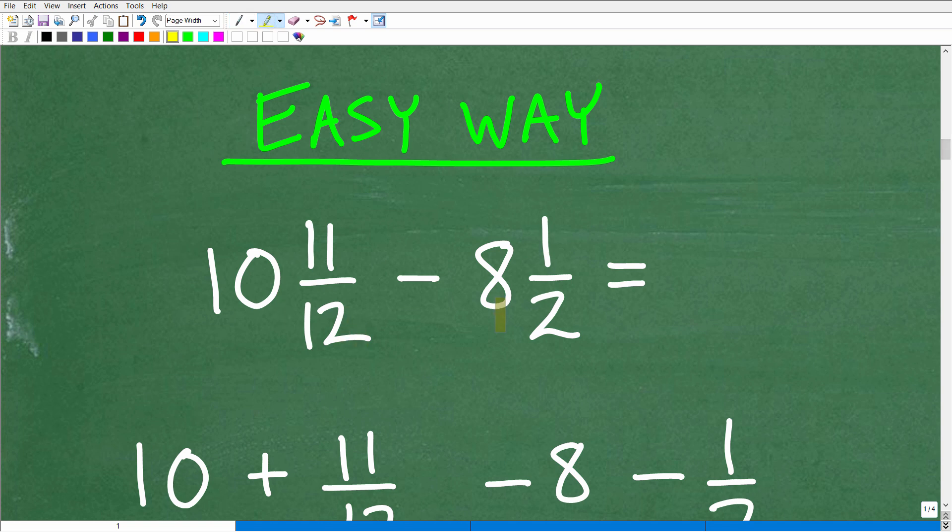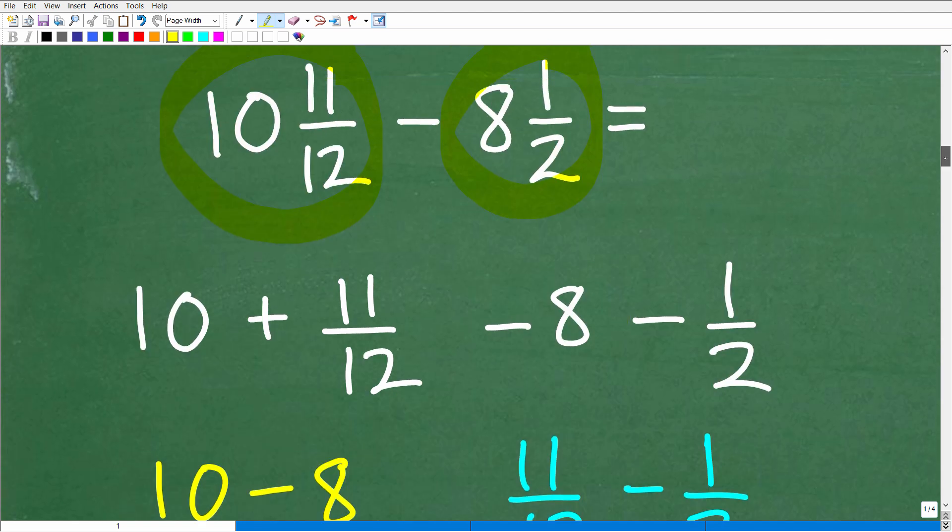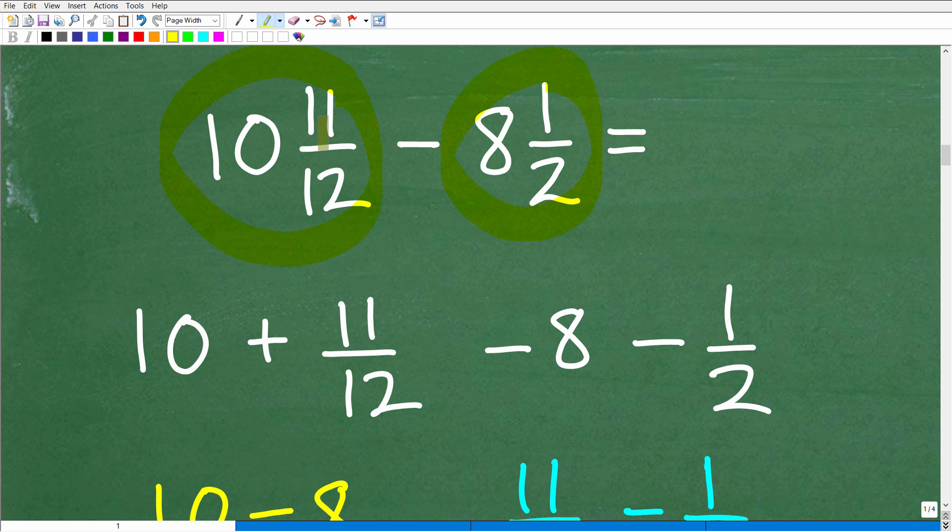So we have a mixed number fraction we need to kind of conceptualize each one of these numbers. So 10 and 11 twelfths, let's just talk about what a mixed number means. Well this means 10 plus 11 twelfths. So we can really think of it as 10 plus 11 twelfths. Now we're taking away, we're going to subtract away 8 and 1 half. So we've got to subtract an 8 away and then we also got to subtract a 1 half away. So in total we want to subtract 8 and 1 half.